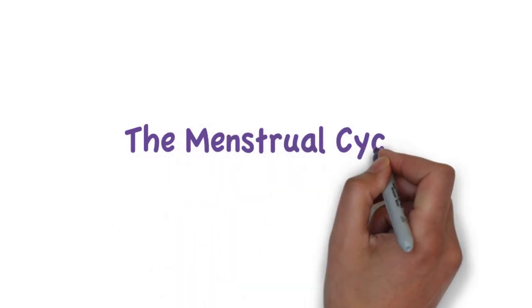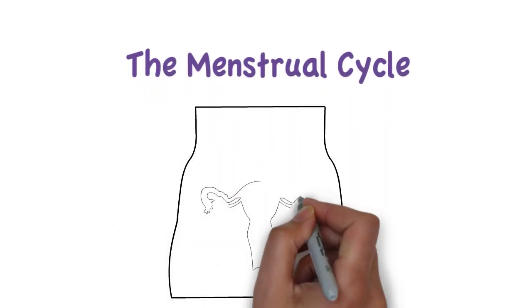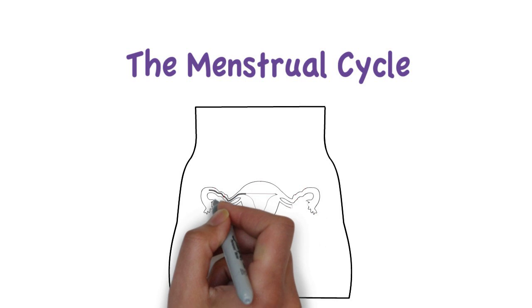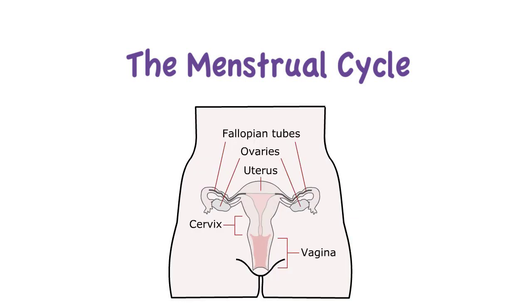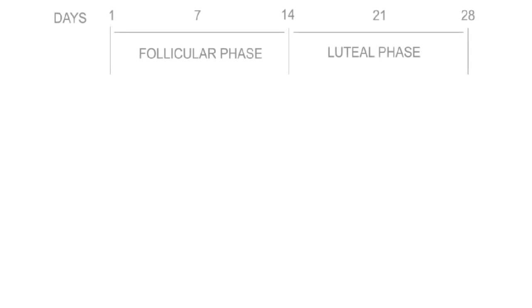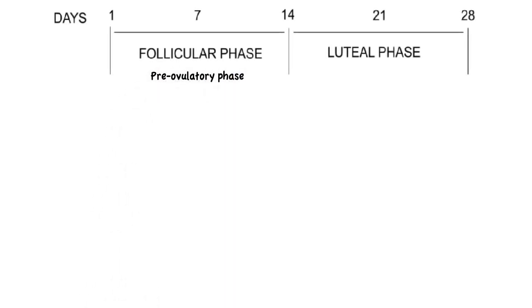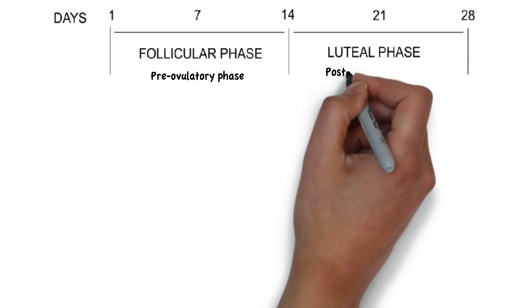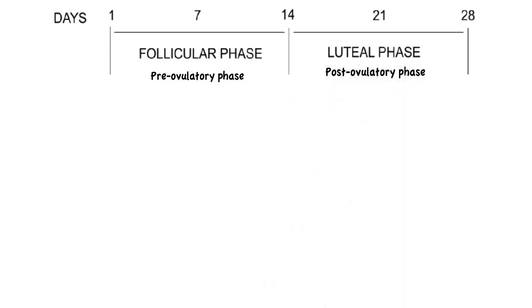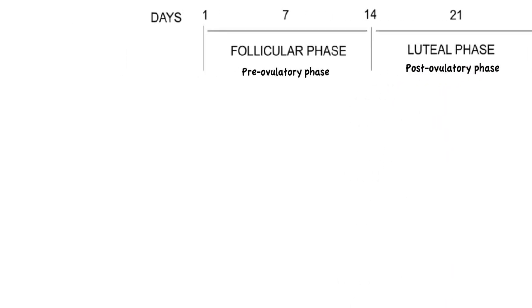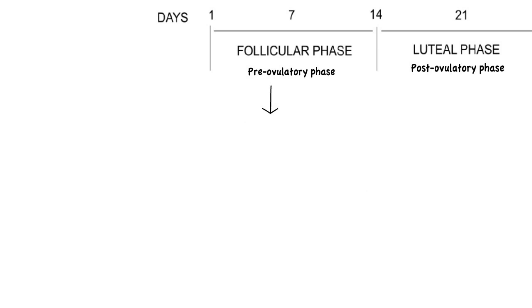The menstrual cycle refers to the cyclic changes that occur in the female reproductive system to make pregnancy possible. This cycle consists of two phases: a follicular phase, or pre-ovulatory phase, and a luteal phase, or post-ovulatory phase.